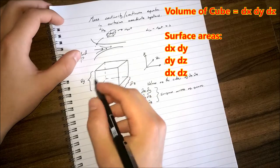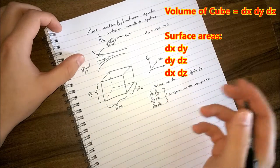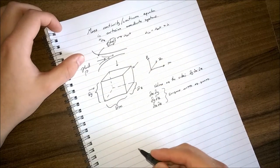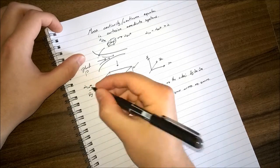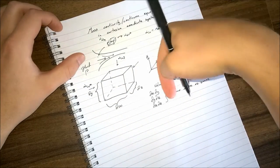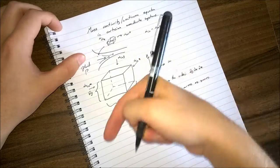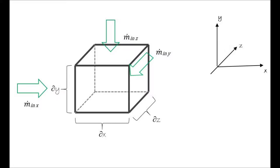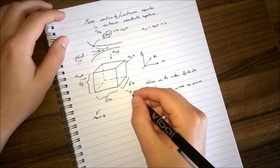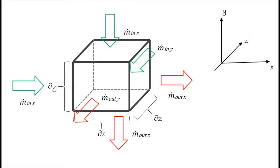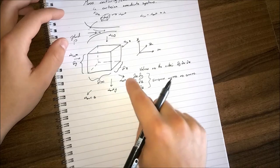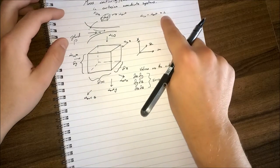We assume fluid flows in from the three hidden faces: M_in_x travelling in the X direction, M_in_y travelling in the Y direction, and M_in_z travelling in the Z direction. Then we look at the flow out. The sum of the x, y, z inflows minus the sum of the x, y, z outflows will equal our change in mass.